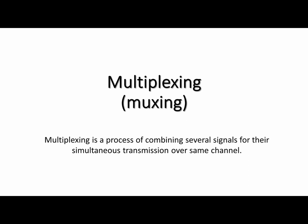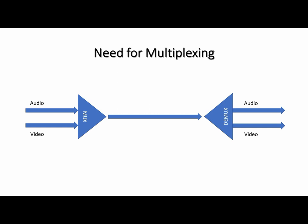Multiplexing makes better use of the channel capacity by allowing several different signals to be clustered into a single group so that they can be handled as a single entity. For example, the audio and video signals of TV broadcasting are multiplexed together and handled through the transmitter and receiver as a single quantity, until they are split and separately demodulated after they are received.